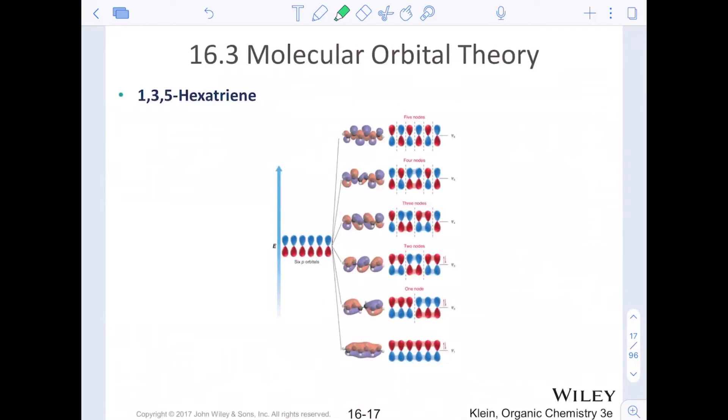Yes, we can think about three pi bonds, a hexatriene, and we see that the only thing I really want us to see here at this point in our lives is that when we have six p orbitals, one electron in each, we get six options for molecular orbitals. There is that six to six relationship.